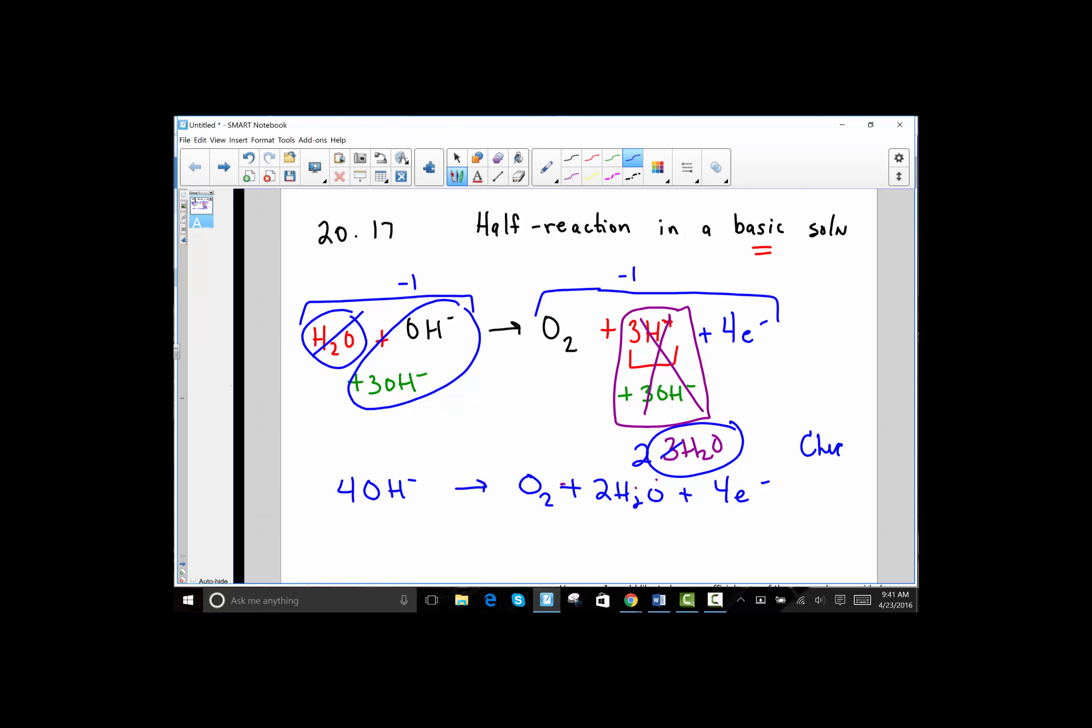When you check your work, make sure that it's balanced by mass and by charge. We have four oxygens on the left, two and two makes four on the right. There's four H's on the left, we have four H's on the right. The overall charge on the left is at a negative four. And the overall charge on the right is also at a negative four.